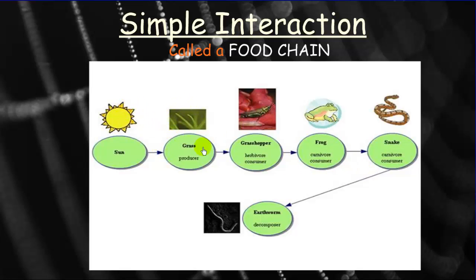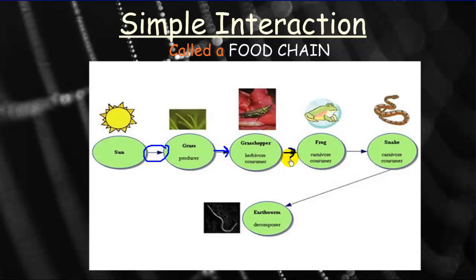All the organisms in a food chain are biotic factors — living things — while the sun is the abiotic factor that provides the initial energy. Within the food chain, arrows show the direction energy is flowing. The sun provides energy to the grass, the grass to the grasshopper, the frog acquires energy by eating the grasshopper, and so on, ending with the earthworm as the decomposer.